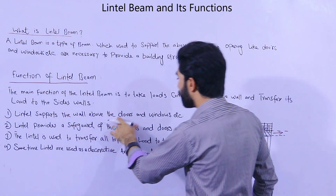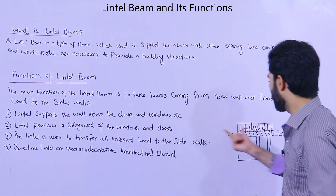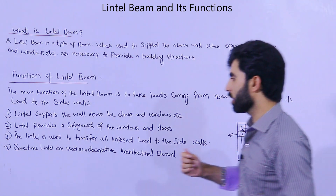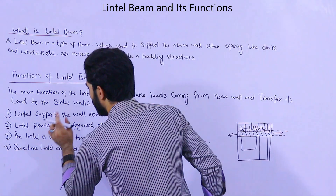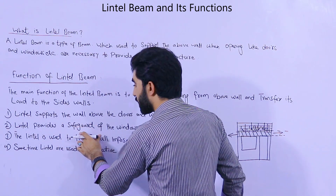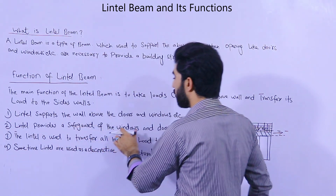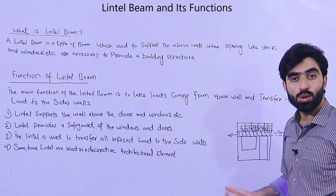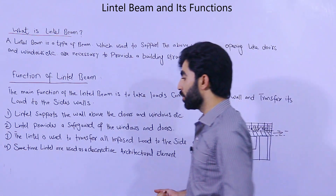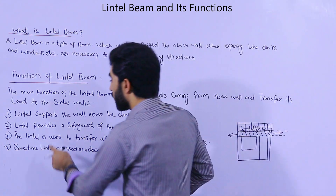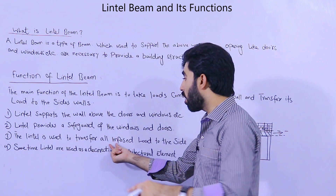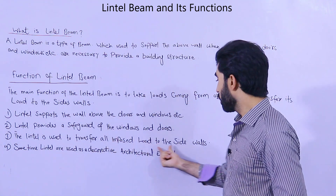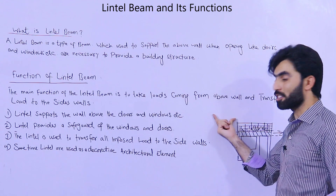The lintel beam supports the wall above doors and windows. The second function is that the lintel beam provides a safeguard for the doors and windows. It is used to transfer all imposed loads to the side walls, as discussed before.